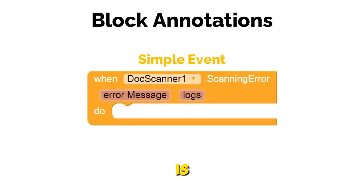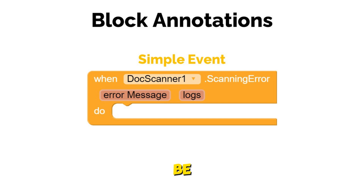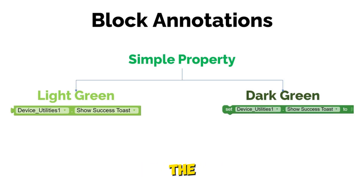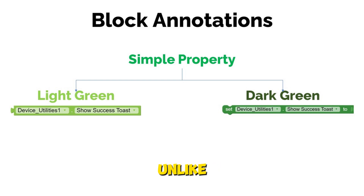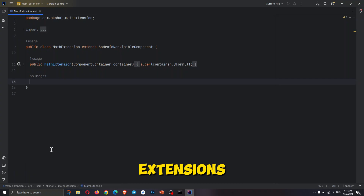The yellow block is called the simple event. It is used to check if an event or function is completed or not, and can be used to return some values after completion of a function. The green block is called the simple property. It has two categories: light green and dark green. The light green returns a value and does not need any parameter, unlike the simple function. The dark green block does not return anything and is used to set values of the variables in the extensions.